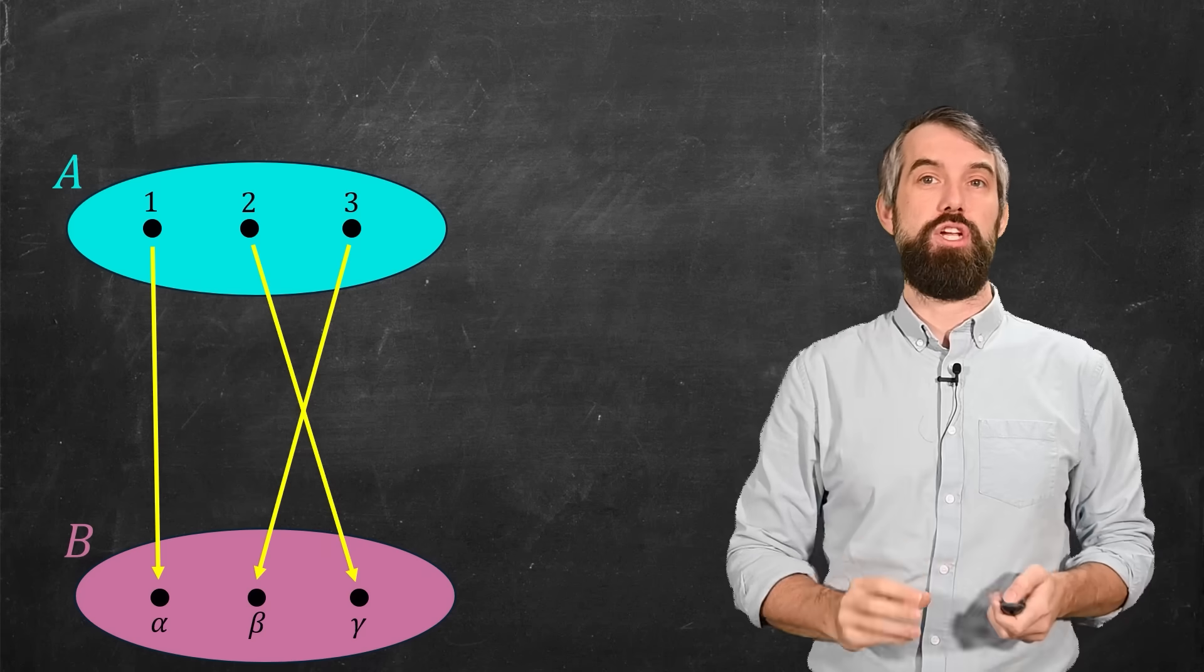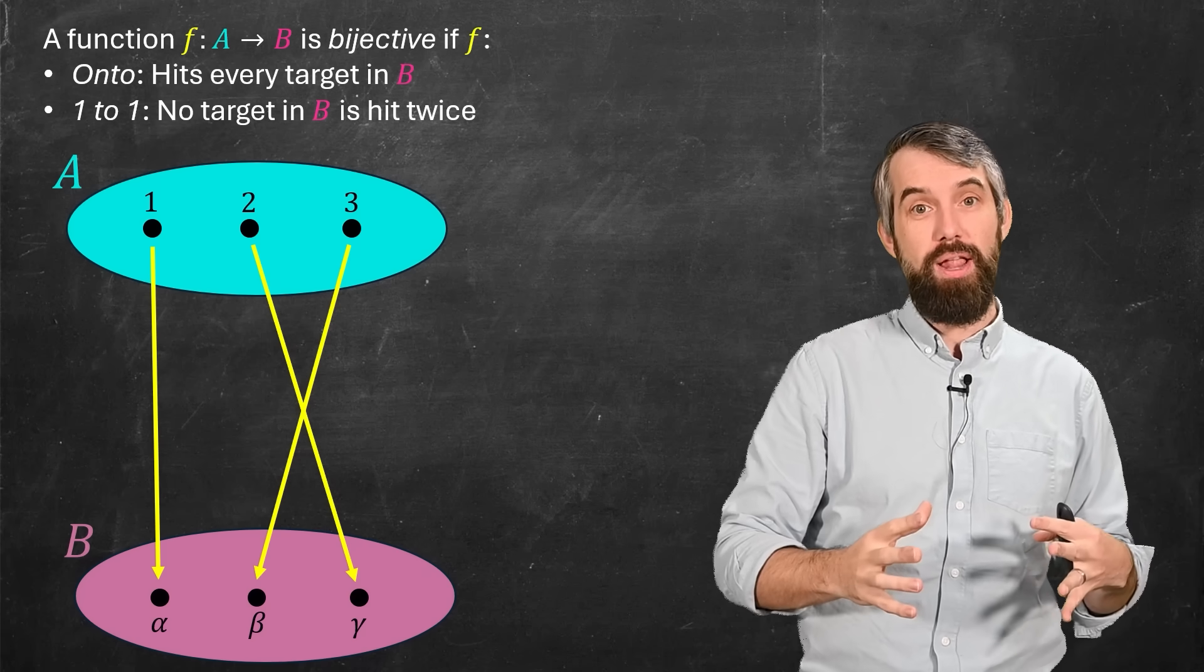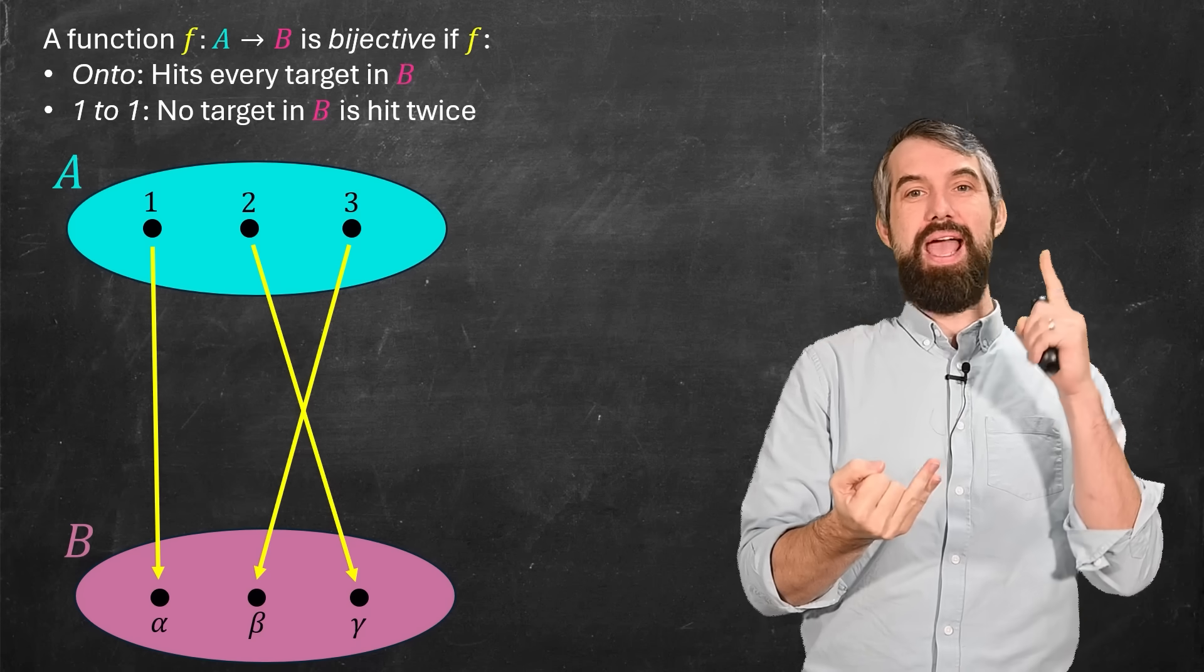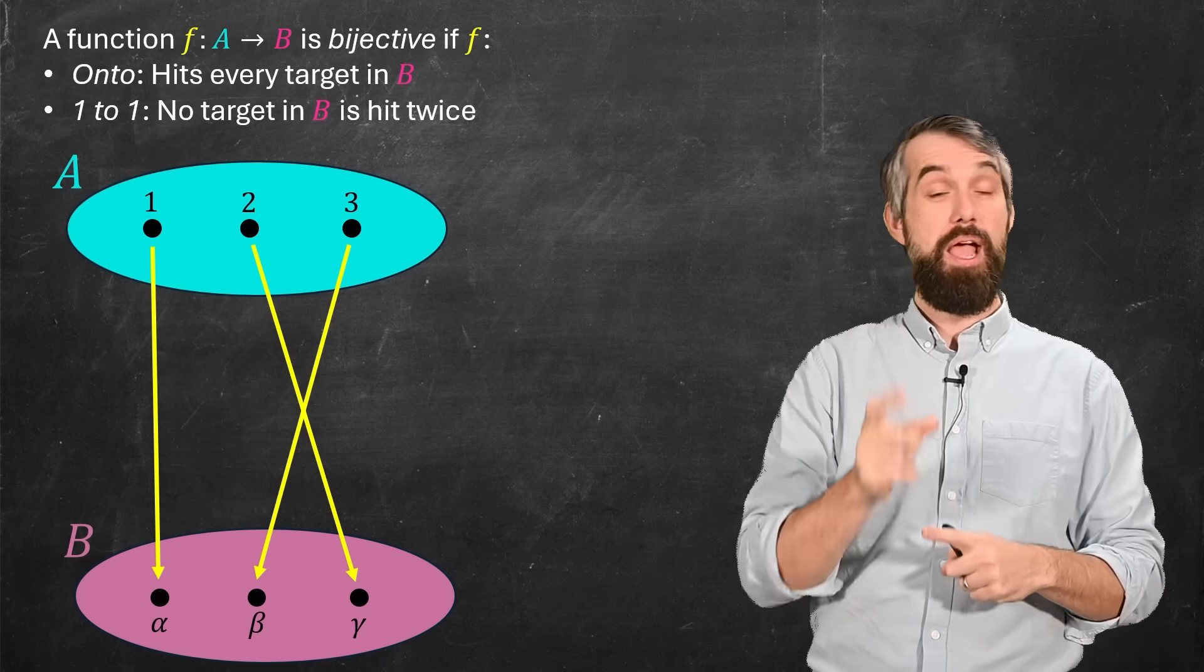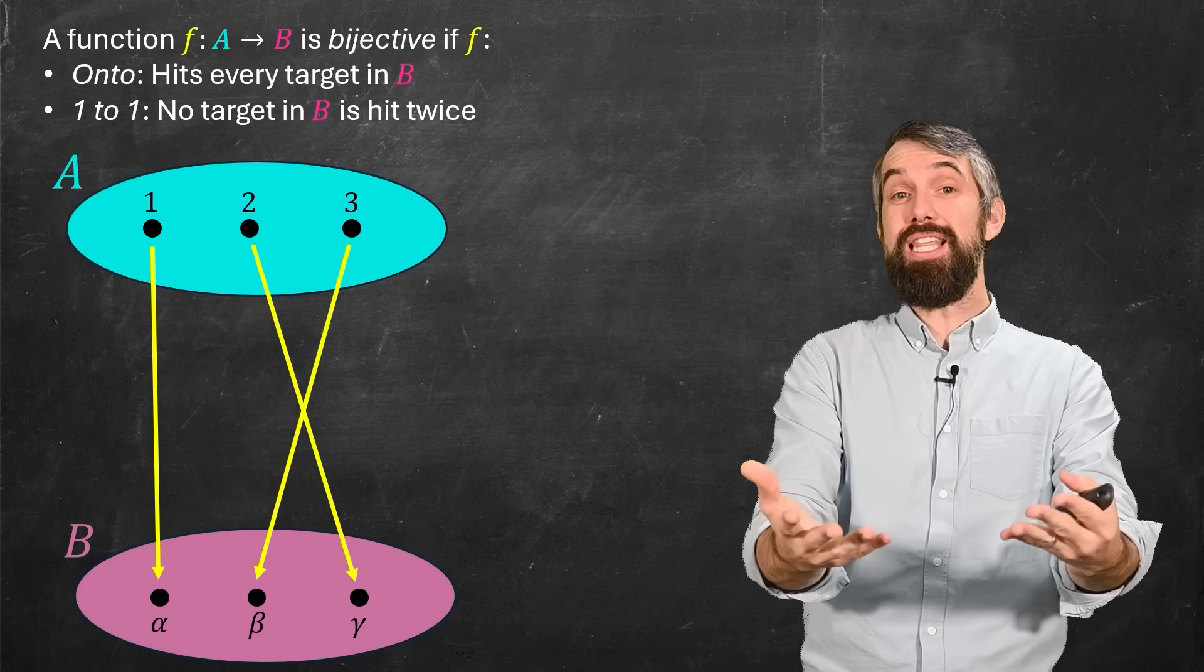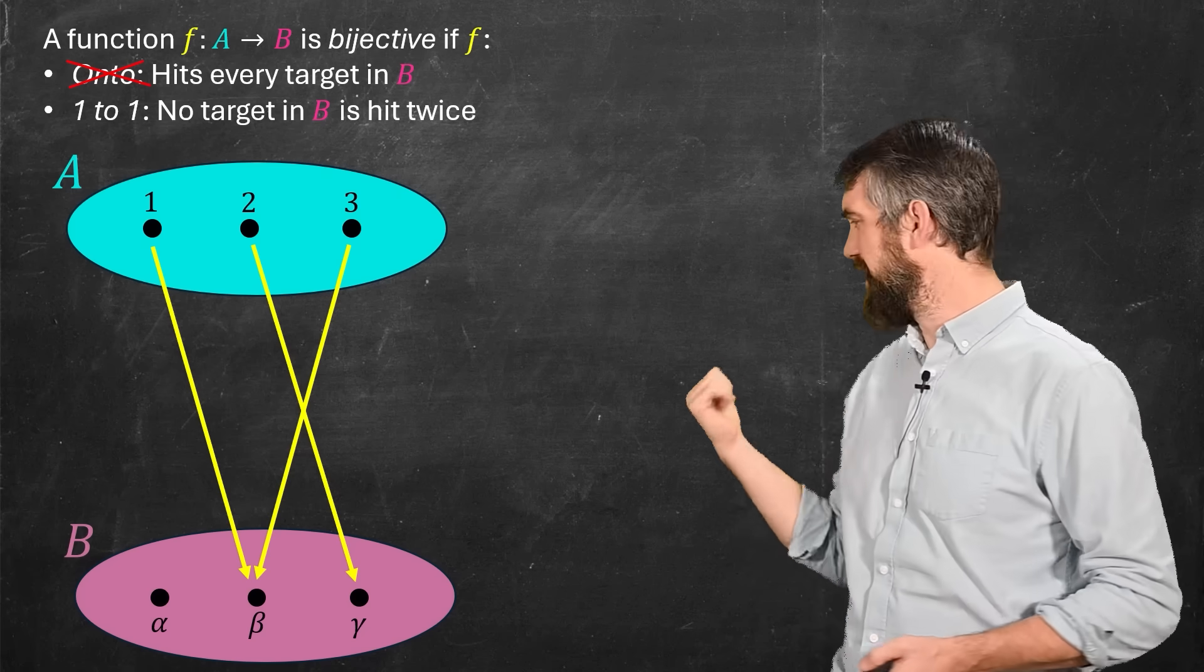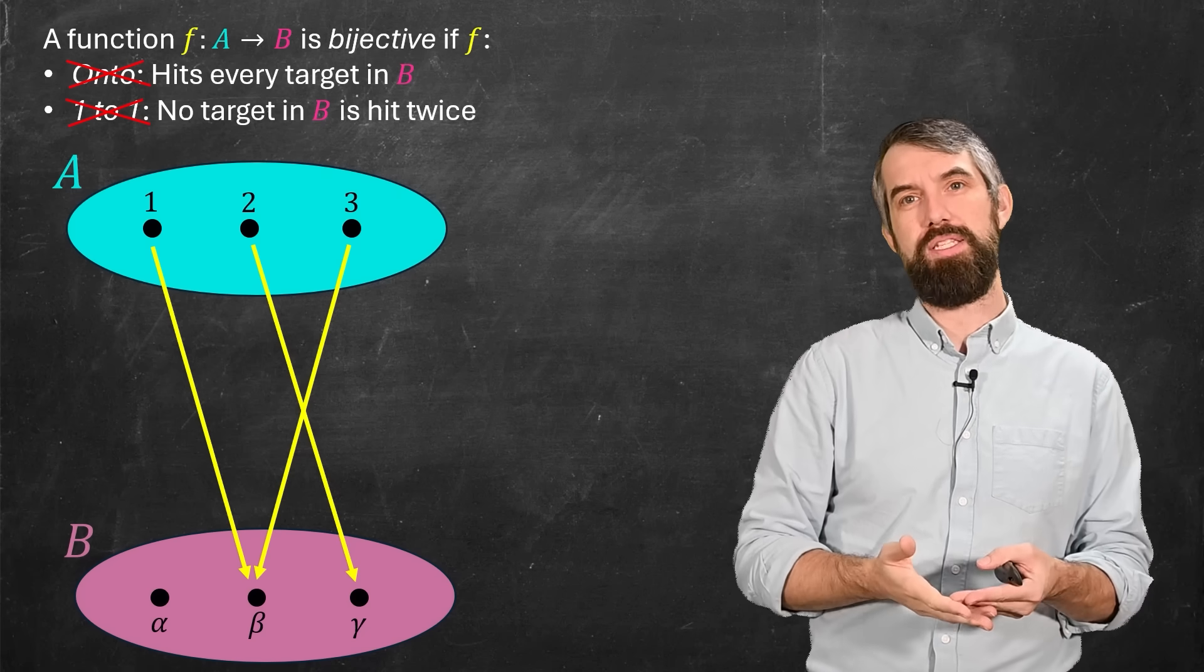First, it needs to be what's called onto. Onto means it hits everything in B. The alpha and beta and gamma are the image of something. Everything is being hit. And secondly, it's what's called one-to-one, which means it hits each thing only once. In this one, nothing hits alpha, so it's not onto. And it's not one-to-one either, because both 1 and 3 go to beta. It fails both of those properties.